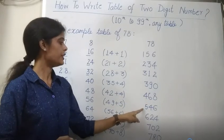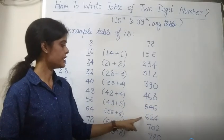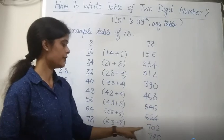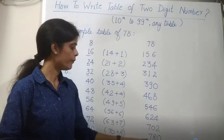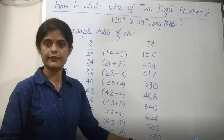78 times 6 is 468. 78 times 7 is 546. 78 times 8 is 624. 78 times 9 is 702. And 78 times 10 is 780.